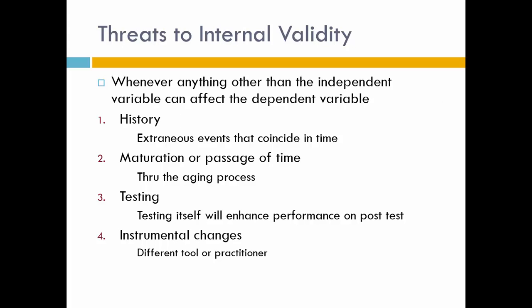There are seven threats to internal validity — seven things that get in the way and might also affect your outcome variable. A threat is anything other than the independent variable that could affect the dependent variable. The first threat is history: events that coincide in time with your study.